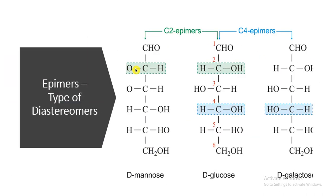Epimers are a type of diastereomer in which two compounds differ at only one chiral center. For example, D-mannose and D-glucose are C2 epimers of each other — only at the C2 position is the chirality changed; the arrangement of atoms is in opposite directions but they are not mirror images. Similarly, glucose and galactose are C4 epimers, differing in the arrangement of atoms only at the C4 position.